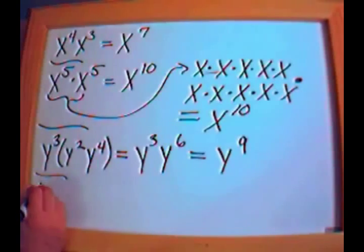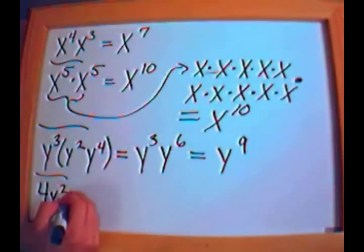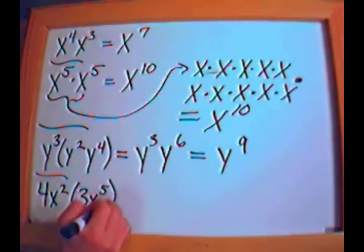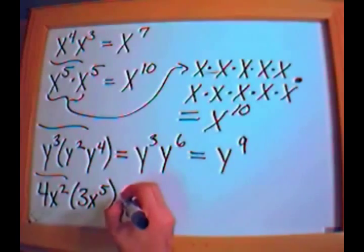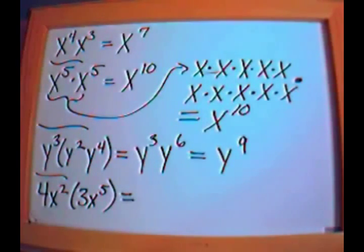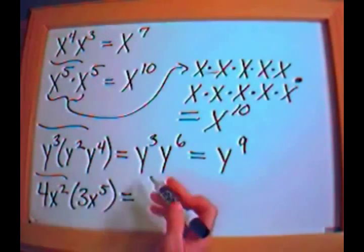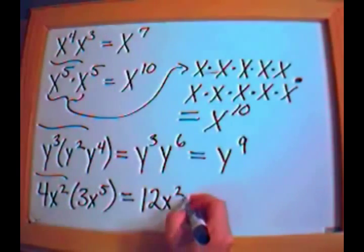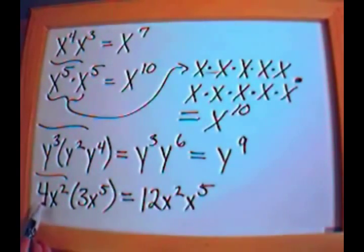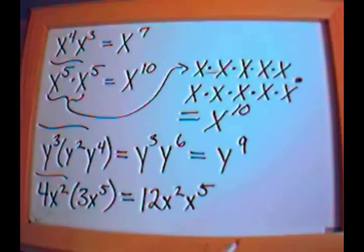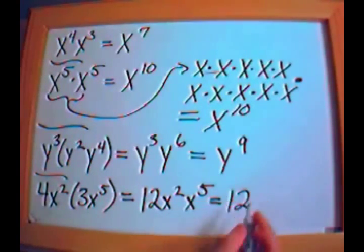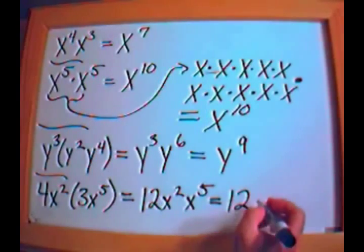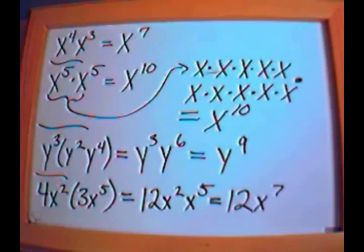What if you have 4x squared times 3x to the fifth? Take it one step at a time. Multiply the numbers: positive 3 times positive 4 is 12. Write down x squared and x to the fifth. Then the base is the same, and 2 plus 5 is 7, so we get x to the seventh. The answer is 12x to the seventh. The only real multiplication needed was on the coefficients outside.